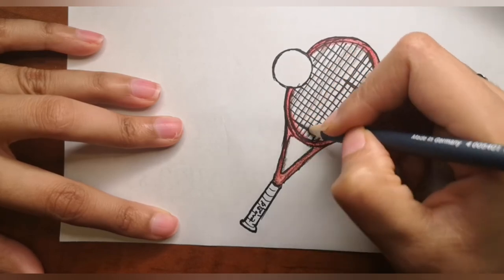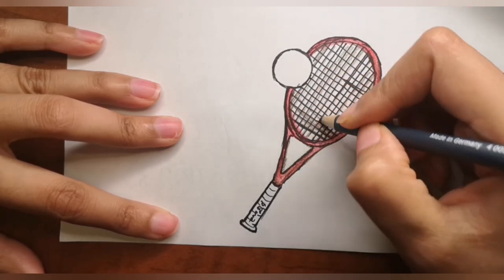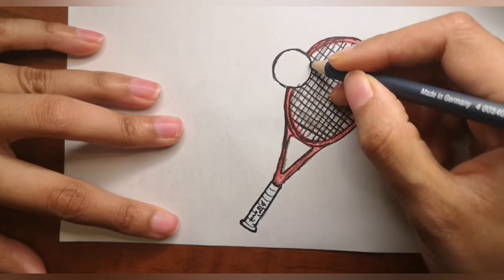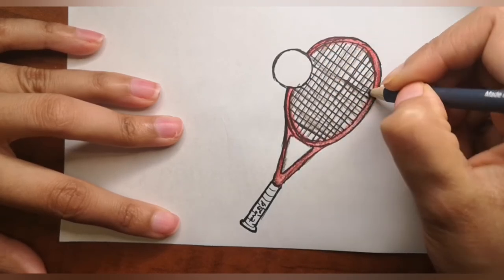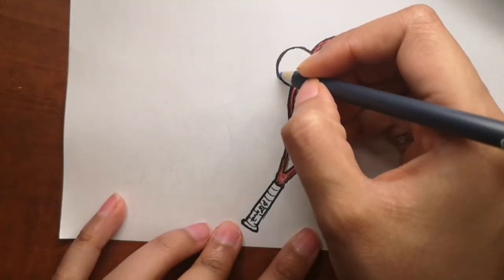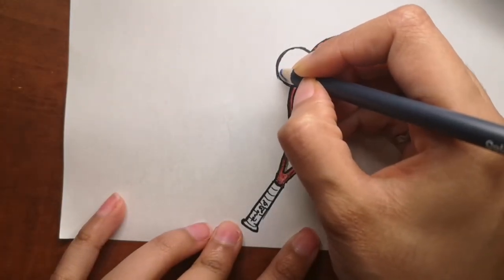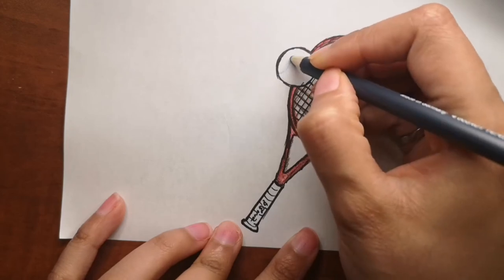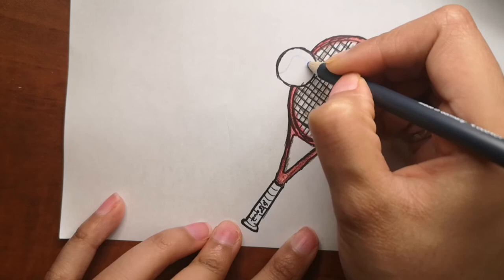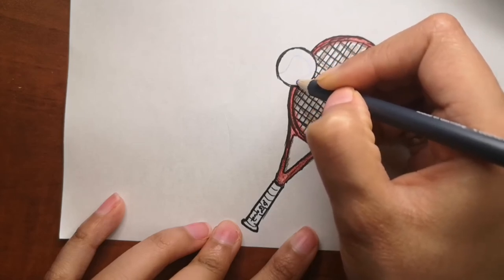You can see I used red for the racket, and for the strings you can either use blue color because some strings are transparent, or I used brown just to give it a nice look. Now I'll show you how I added in the line of the tennis ball. It's just a curvy line that all tennis balls have.